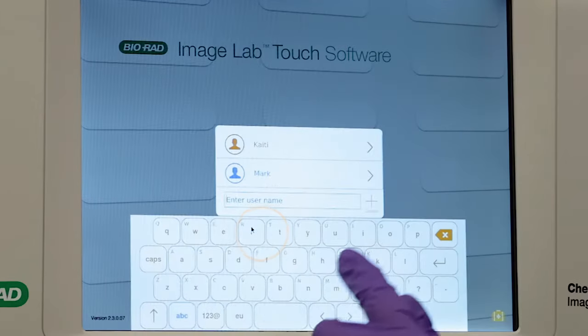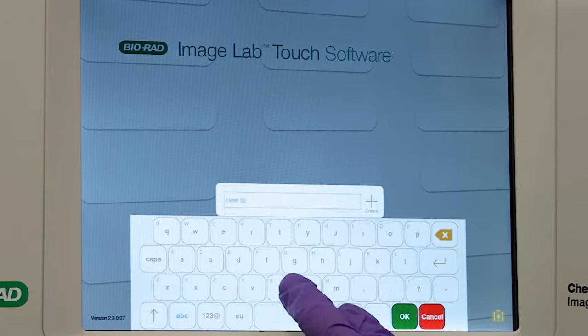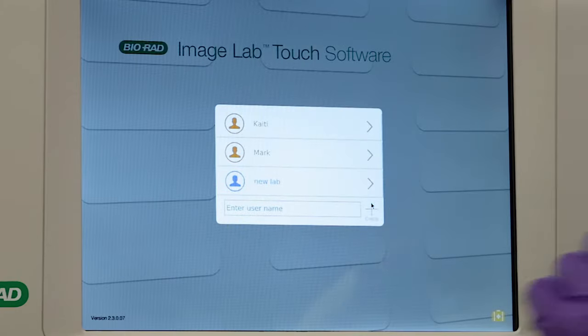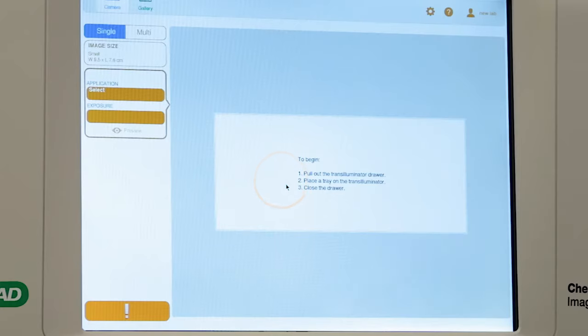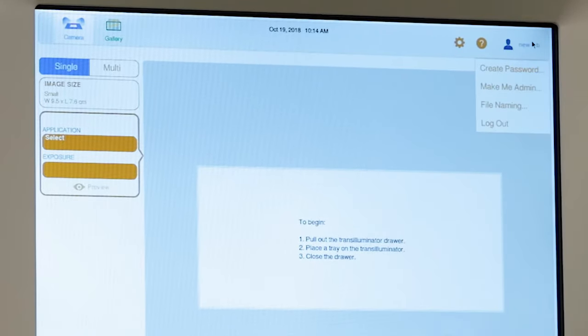If you're a new user, type the desired username, click the plus sign, and the new login will be entered. Administrative controls can be set by clicking the person icon in the top right-hand corner.